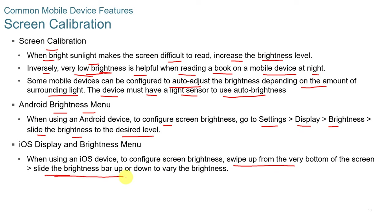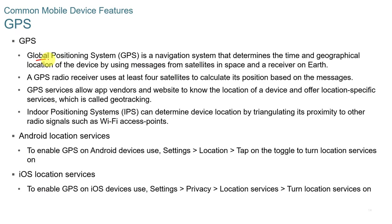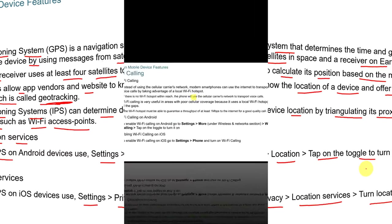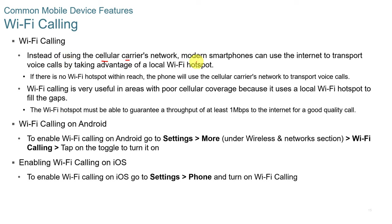GPS, or Global Positioning System, is a navigation system that determines the time and geographical location of a device using messages from satellites in space and a receiver on Earth. A GPS radio receiver uses at least four satellites to calculate its position. GPS services allow apps, vendors, and websites to know the location of a device and offer location-specific services, called geo-tracking. Indoor positioning systems can determine device location by triangulating proximity to radio signals such as Wi-Fi access points. To enable GPS on Android, go to Settings > Locations. On iOS, go to Settings > Privacy > Location Services.